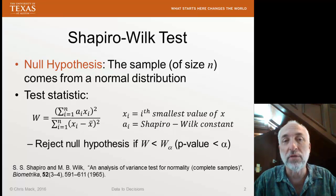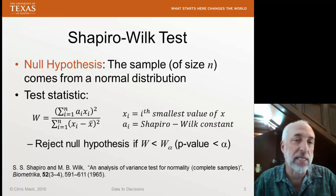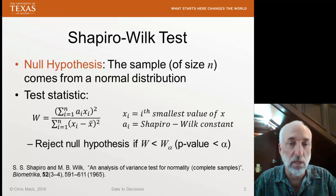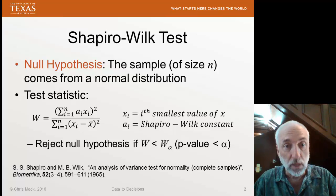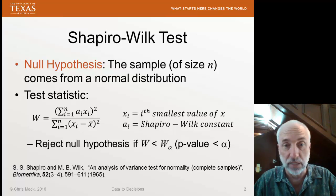The numerator is a little bit strange because it has these constants — the Shapiro-Wilk constants a_i — that are multiplying the data. We sum up all of those products and square them, and that makes up the numerator.